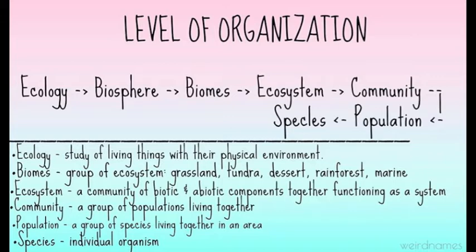Ecology is the study of living things with our physical environment, while biomes are a group of ecosystems which include the grassland, tundra, desert, rainforest, and marine. The ecosystem is a community of biotic and abiotic components functioning together as a system, while the community is a group of populations living together, and the population is a group of species living together in an area.